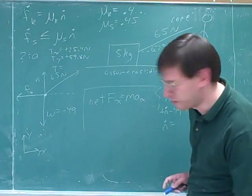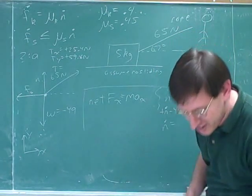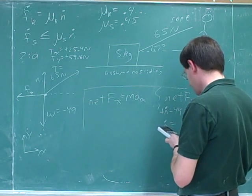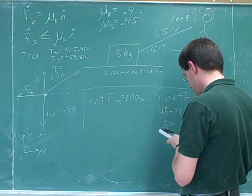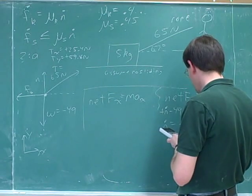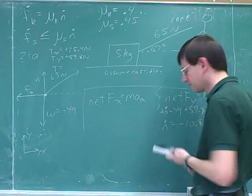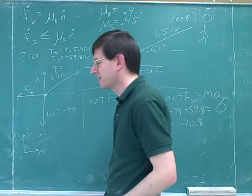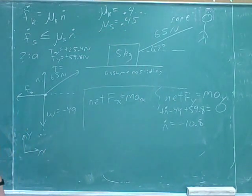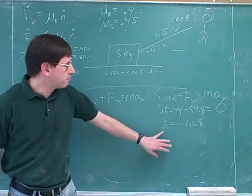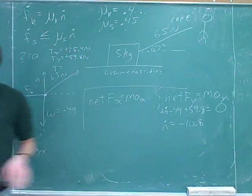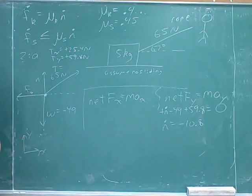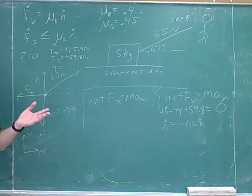This comes out to be negative 10.8. How is it a negative force? That means it's jumping off the ground, right? So it means that the box is moving. So we need to do it again. So what we got here is that the magnitude of the normal force is negative, which is impossible. Right? Magnitudes can't be negative, which means we must have made a wrong assumption.